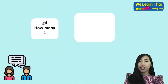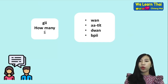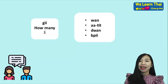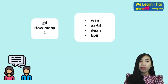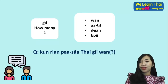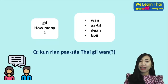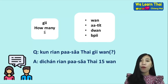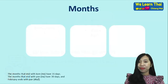You can combine with the question words: gi wan — how many days, gi aa thit — how many weeks, gi duean — how many months, or gi pii — how many years. For example: khun rian phasa thai gi wan kha? — How many days have you studied Thai? Di chan rian phasa thai 15 wan kha — I have studied Thai for 15 days.